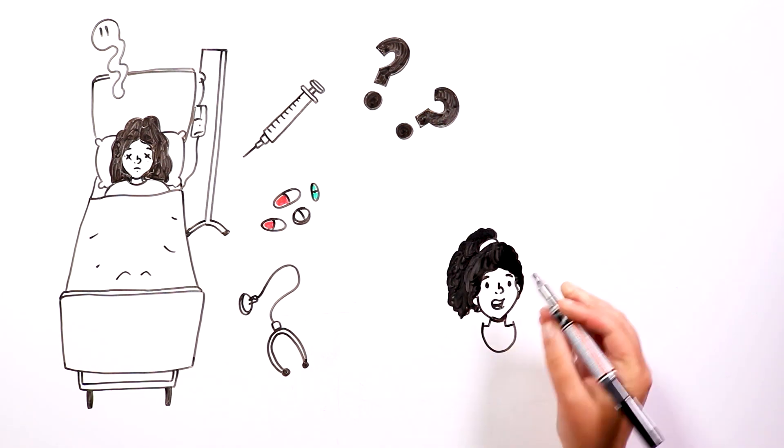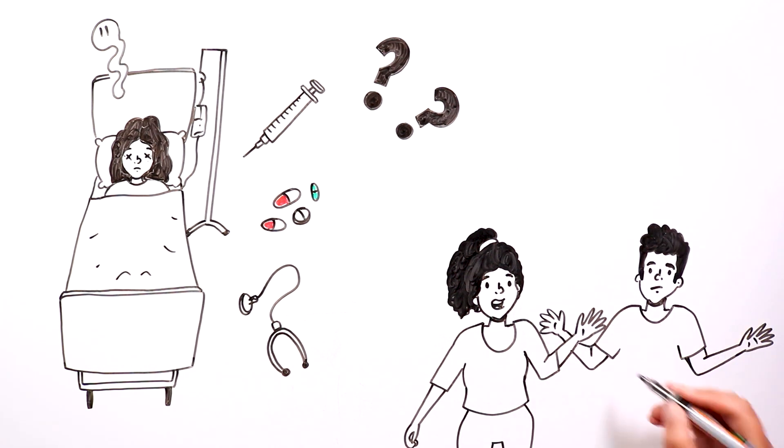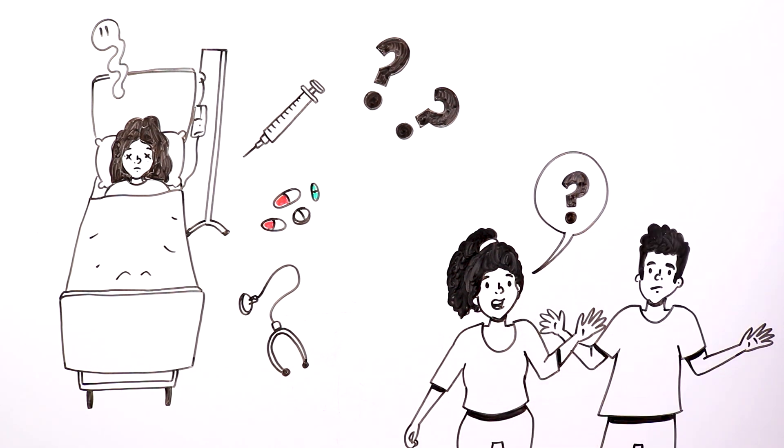However, the tragedies didn't stop there. Estefania's parents then claimed that strange events started to take place in their house.